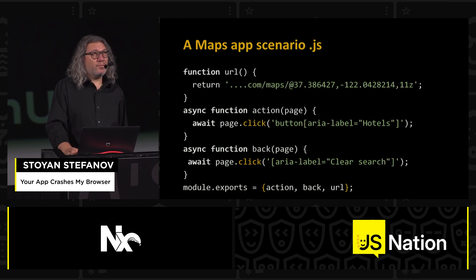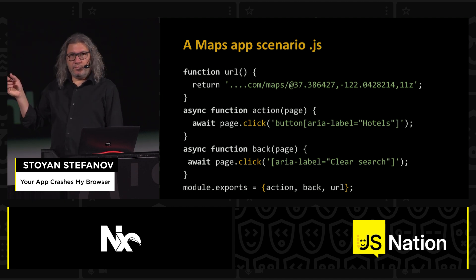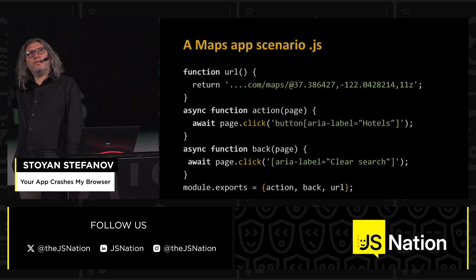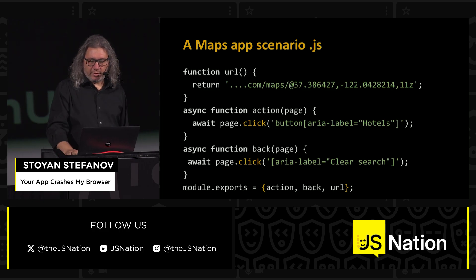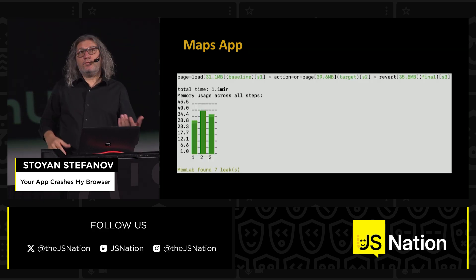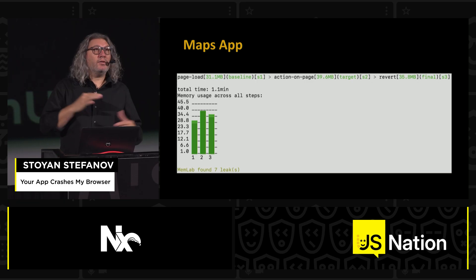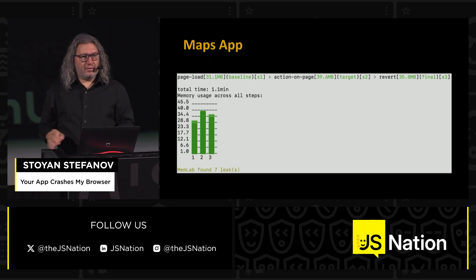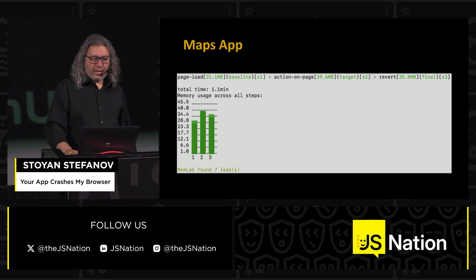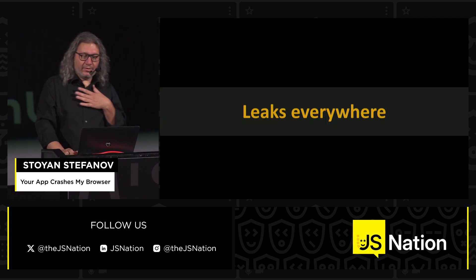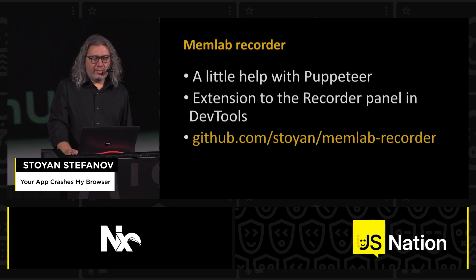Here's a real example from a real-life maps application that shall remain nameless. You load the map, click a button that says 'show me hotels around here,' then say 'no, forget it' and clear the search to go back to the initial state. This is what MemLab tells us: there was some memory used in the first step, more in the second, and in the third step we didn't go back to the beginning — all that showing of hotels left some stuff behind. Leaks are everywhere; it's not our fault, we're not sloppy, we're not bad developers — everybody does it.